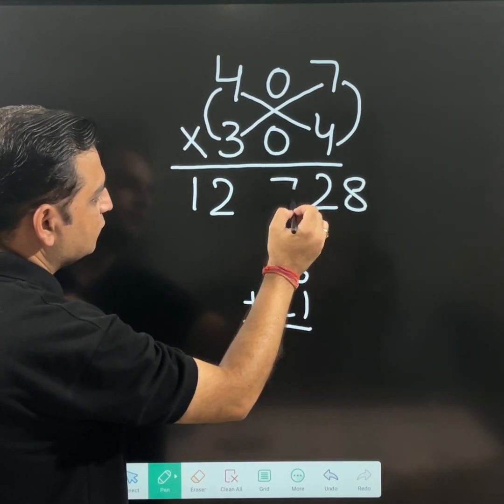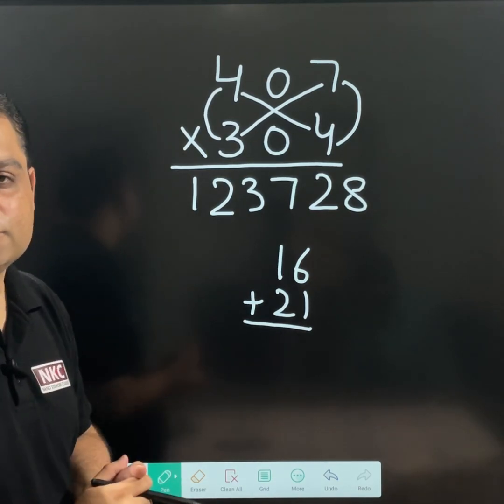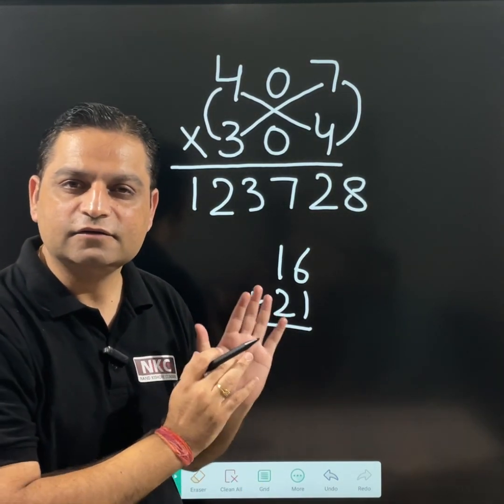Just add them. 6 plus 1 is 7. 2 plus 1 is 3. This is going to be the answer. I hope you are finding it easy to do.